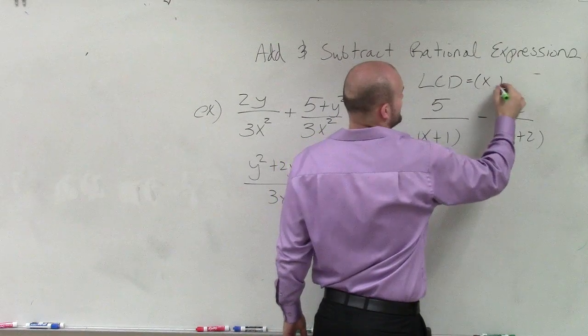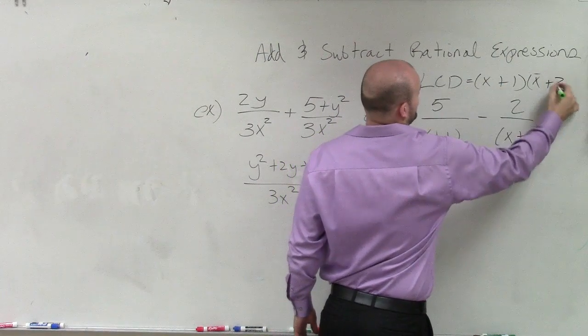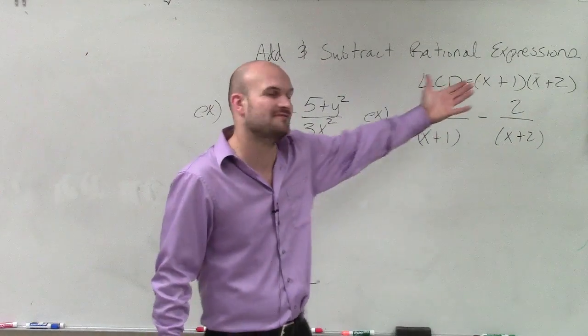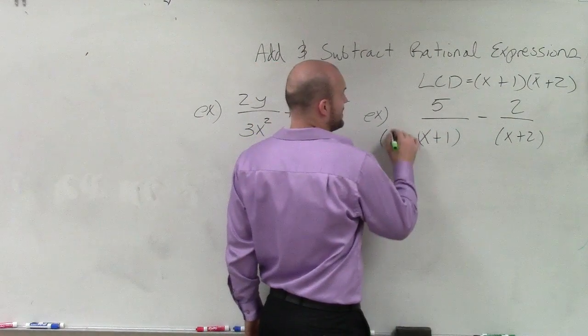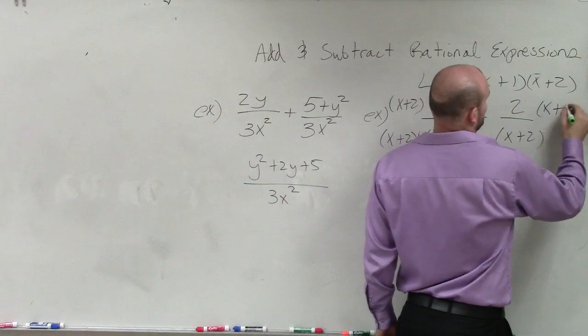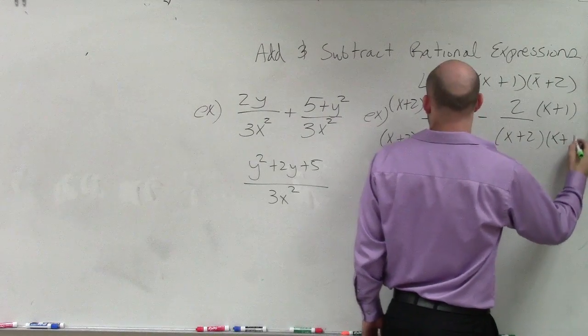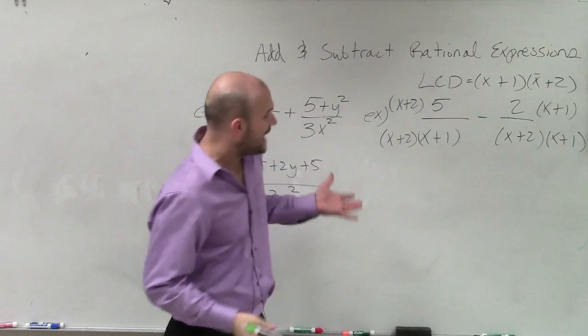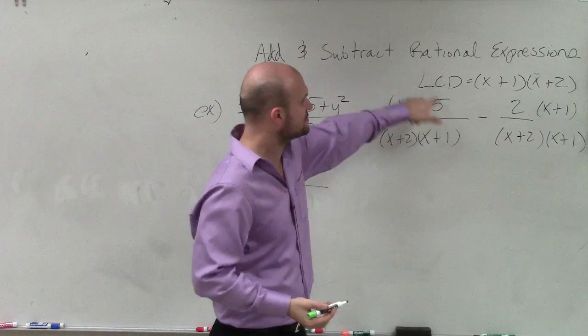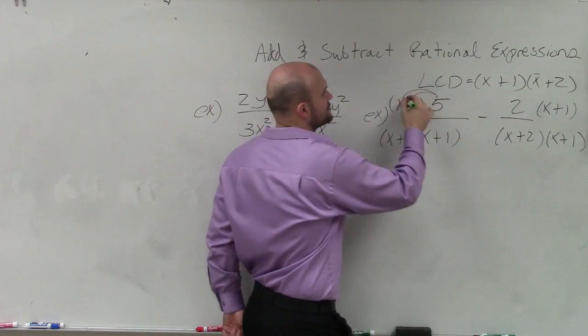In this case, my LCD is going to be (x + 1) times (x + 2). So therefore, I need to multiply to get both denominators to have that LCD. So I multiply by (x + 2) over (x + 2), and here I multiply by (x + 1) times (x + 1). So now, what I can do is now my common denominators, I can simplify these. But I can also simplify my numerators by applying distributive property.